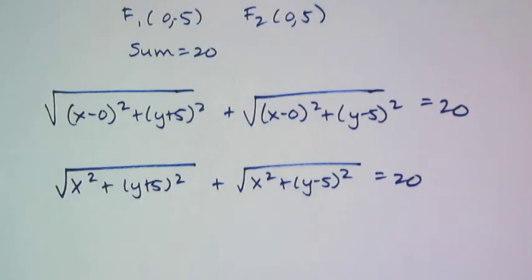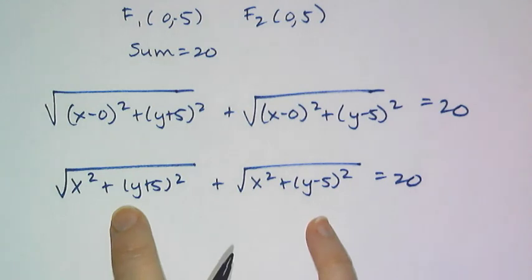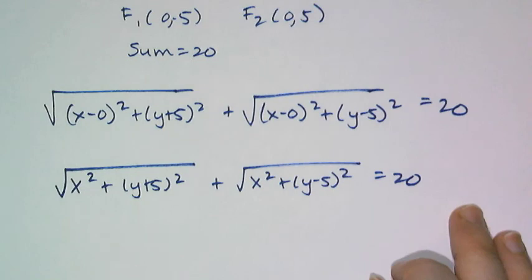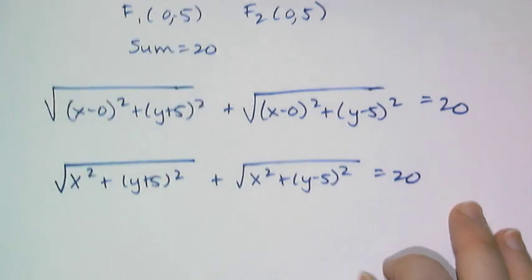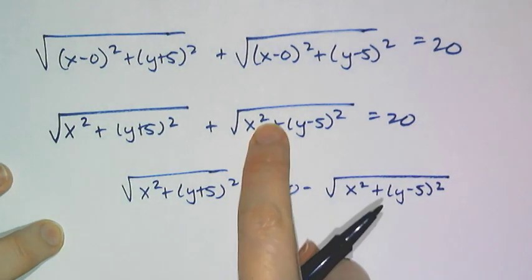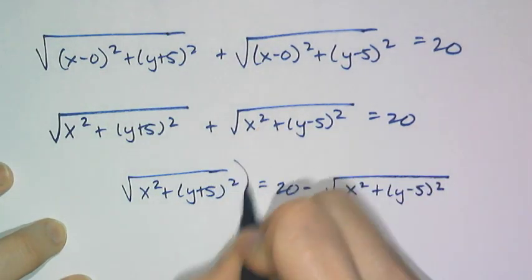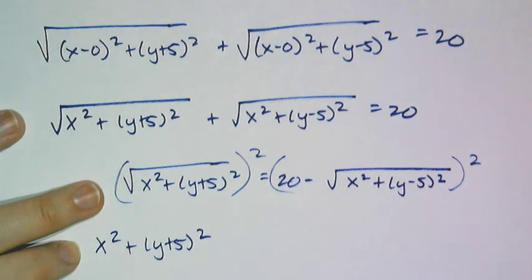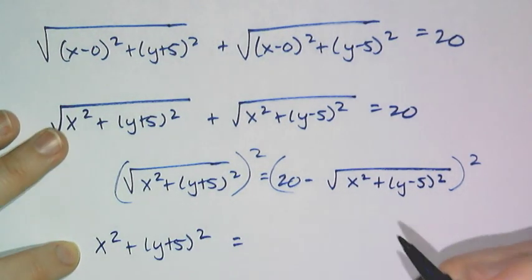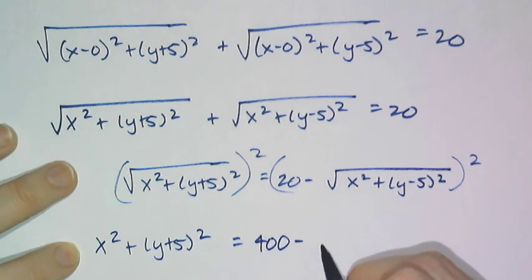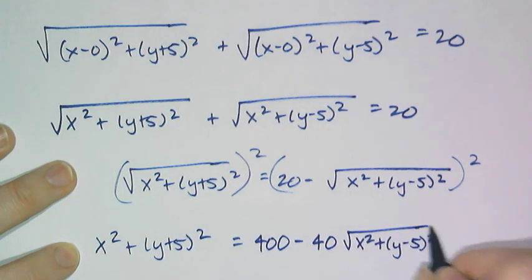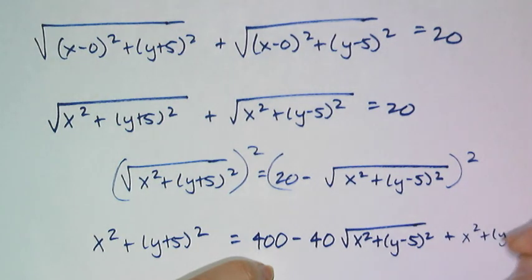To make life easier, I'm not going to square as written, because I don't want to multiply those two radicals together. What I want to do is move one of the radicals to be with the 20, because that binomial is much nicer to square. So I move it over by subtracting, and now this is the equation I'll square on both sides. Squaring gives me x squared plus (y+5) squared on the left, and 400 minus 40 times the square root of (x squared plus (y−5) squared) plus x squared plus (y−5) squared on the right.